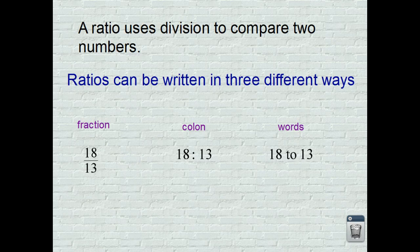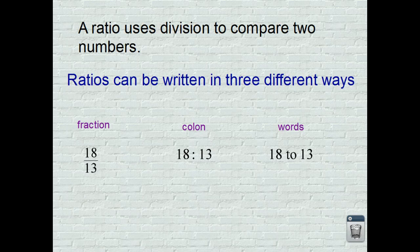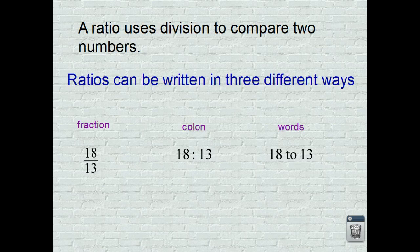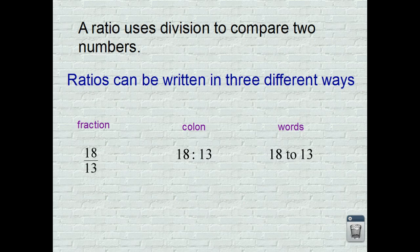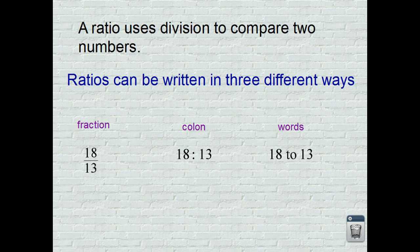The second way that you can represent a ratio is using a colon, so 18 colon 13 is read as 18 to 13. And then you can use words - 18 to 13. Sometimes you see the words out of. There's a few other examples in your textbooks that you can look up. So we have a fraction, it can be written using a colon, or sometimes we have words.